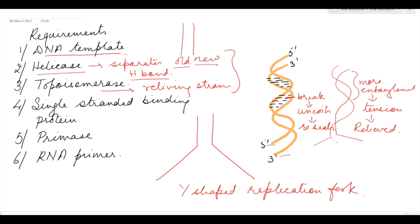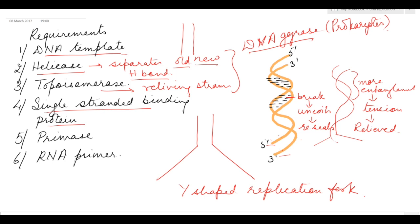Helicases and topoisomerase are together referred to as DNA gyrase in prokaryotes. Next are single-stranded binding proteins. Single-stranded binding proteins bind to the single-stranded DNA to prevent the rejoining or recoiling of the two strands.